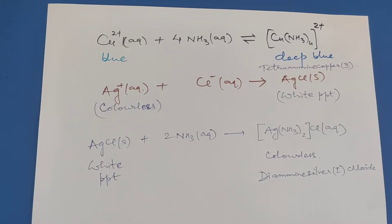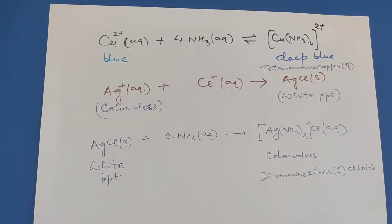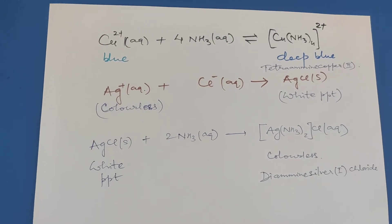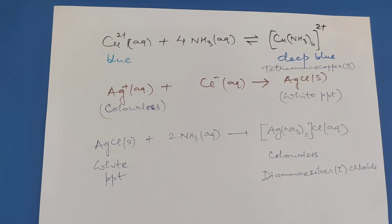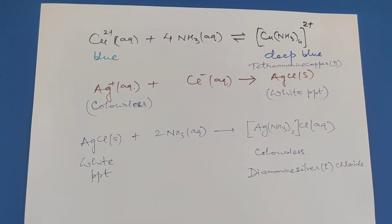Ag+ is colorless. It reacts with Cl- to form AgCl white precipitate. When AgCl white precipitate is treated with ammonia, it forms diamine silver I chloride, which is colorless.